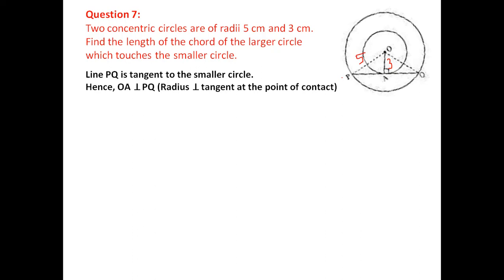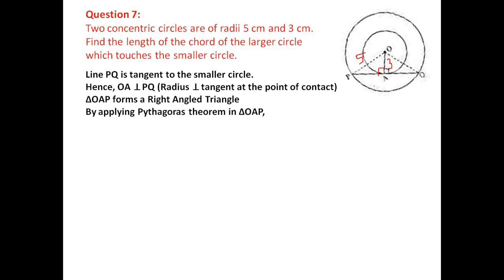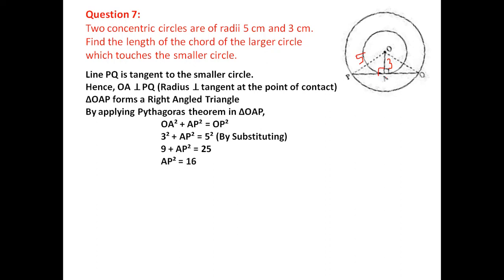In triangle OAP, angle OAP = 90° because the radius is perpendicular to the tangent at the point of contact. By Pythagoras theorem: OA² + AP² = OP². So 3² + AP² = 5², giving 9 + AP² = 25, AP² = 16, AP = 4 centimeters.